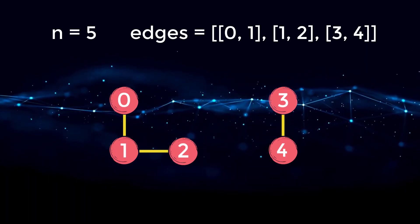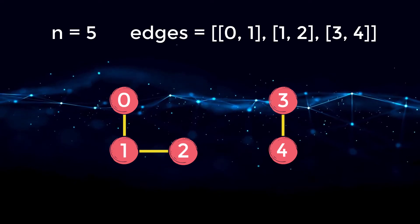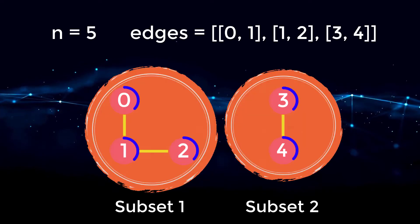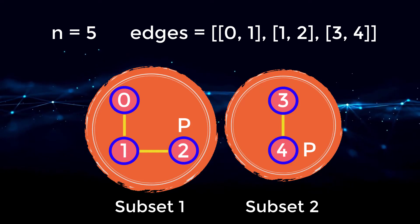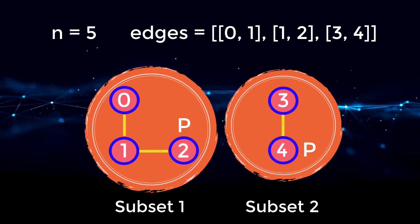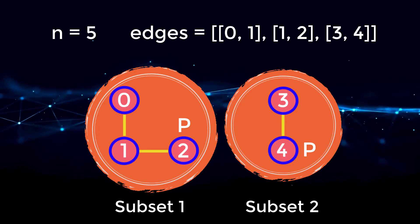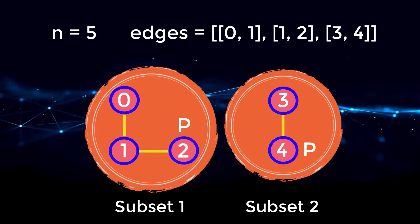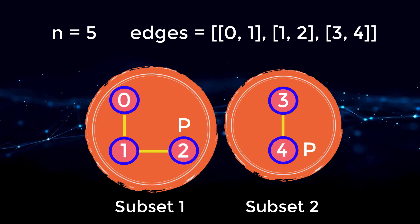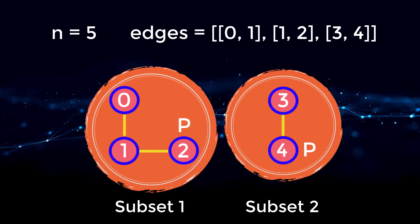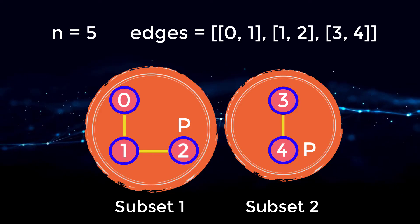The main idea behind UnionFind is that every subset has a parent that it points to. If we merge all connected subsets together and at the end count how many subsets we have in total, that count will be the number of components in the graph. I know that may sound confusing, so let's go over this in detail.